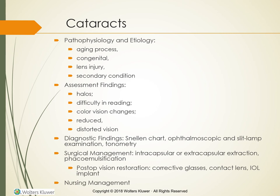Cataracts: Pathophysiology and etiology — cataracts can result from the aging process, can be congenital, can form from lens injury, or be a secondary condition. Assessment findings include halos, difficulty reading, color vision changes, reduced vision, and distorted vision. Diagnostic findings include the Snellen chart, ophthalmoscope, slit lamp examination, and tonometry. Surgical management includes intracapsular or extracapsular extraction and phacoemulsification. Postoperative vision restoration includes corrective glasses, contact lens, and an IOL implant.